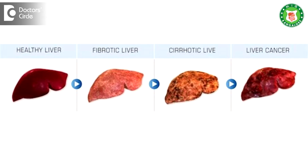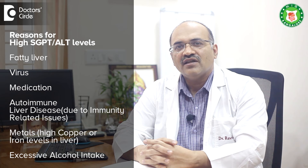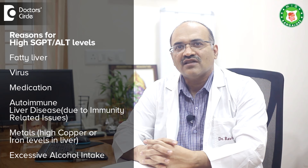SGPT high or ALT high indicates there is some liver damage, also known as liver inflammation. The reasons are: 1) there may be a fatty liver, 2) there may be a virus, 3) it may be because of medications, 4) there may be an immunity-related problem — we call it autoimmune liver disease, 5) it can be because of some metals, especially copper or iron, being more in the liver. These are the reasons for high SGPT elevation, and also one of the common reasons being excessive alcohol intake, which also causes ALT elevation.